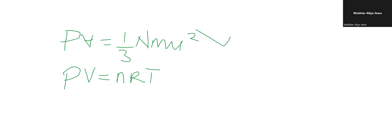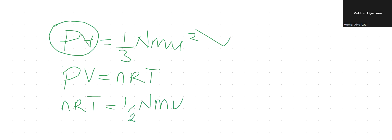Let's see how we are going to manipulate this. Since pV = (1/3)Nmu² and pV = nRT, we can replace pV with nRT. So therefore we have nRT = (1/3)Nmu².